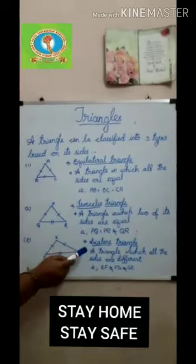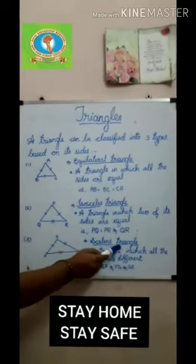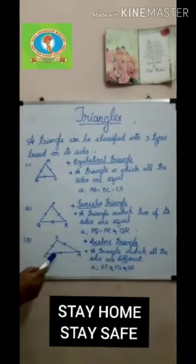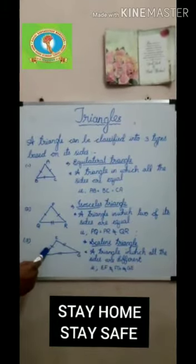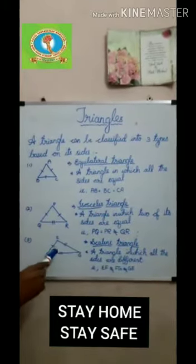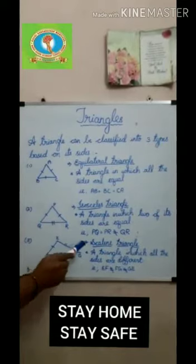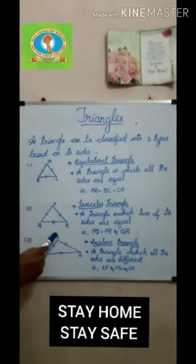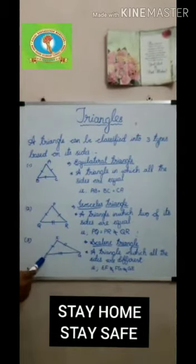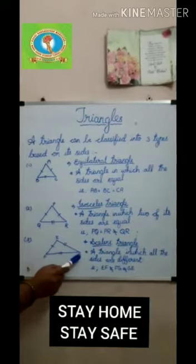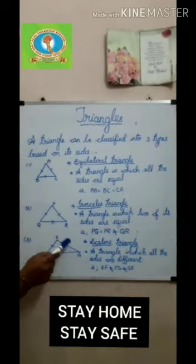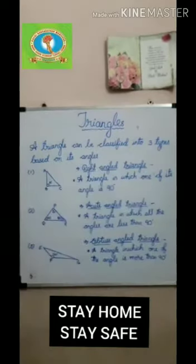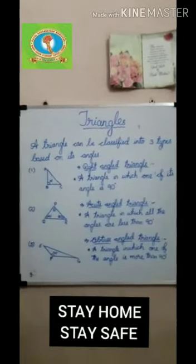The third is the scalene triangle. A triangle in which all the sides are different is called a scalene triangle. Here, EF is not equal to FG, which is not equal to EG.